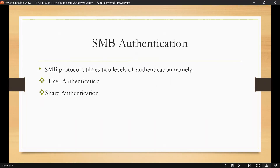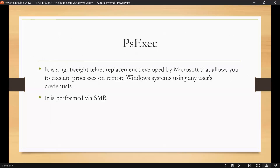The SMB authentication protocol utilizes two levels of authentication: user authentication and share authentication. User authentication requires a username and password in order to authenticate with the SMB server so that it can access a shared file, while share authentication requires only a password in order to access a restricted share.